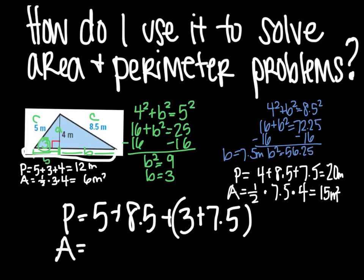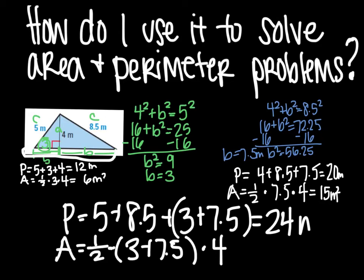Area would be one half. Your base which would be the 3 and the 7 and a half combined times your height which is 4. So perimeter would be 24 meters of the whole triangle. Area would then be 21 meters squared for the entire thing.